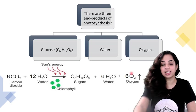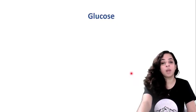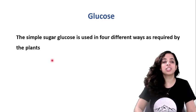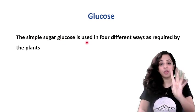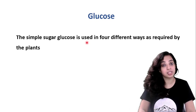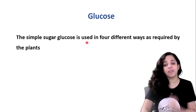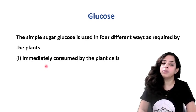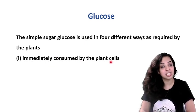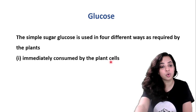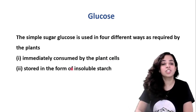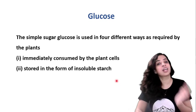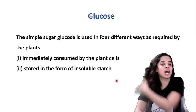Let's talk about glucose in detail. Glucose is a simple sugar and is used in four different ways as required by the plant. First, it is immediately consumed by the plant cells for its functioning and growth. Second, it is stored in the form of insoluble starch for later use.